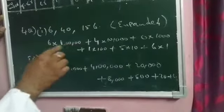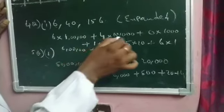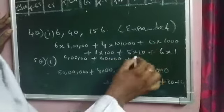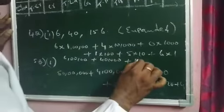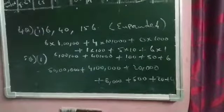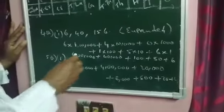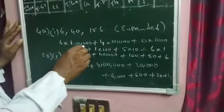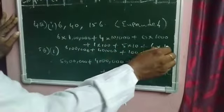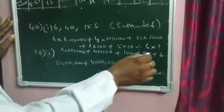So the expanded form is: 6 × 1 lakh + 4 × 10,000 + 0 × 1,000 + 1 × 100 + 5 × 10 + 6 × 1. That gives us: six lakhs, plus forty thousand, plus zero, plus one hundred, plus fifty, plus six. In this way the given number six lakhs forty thousand one hundred fifty-six is written in expanded form.